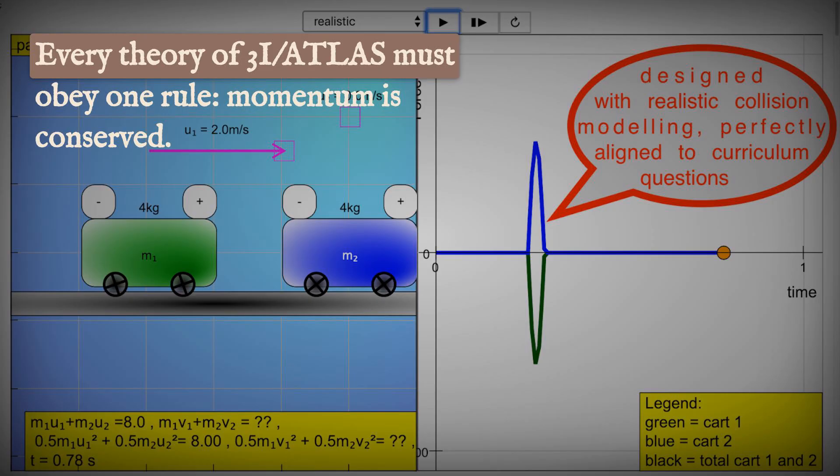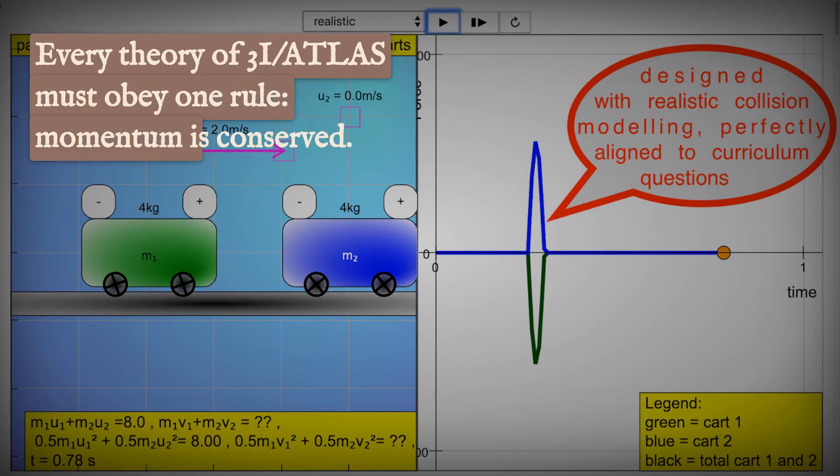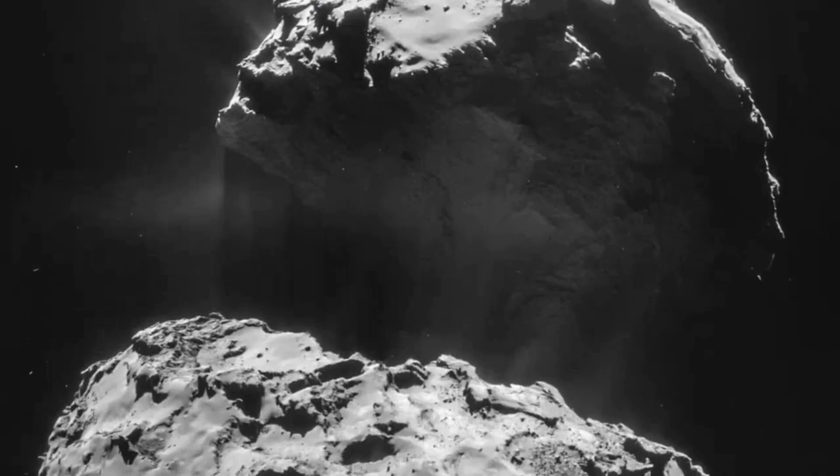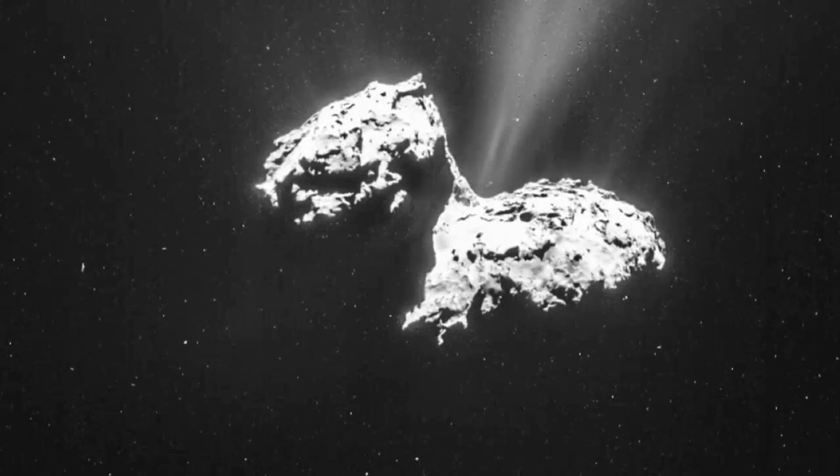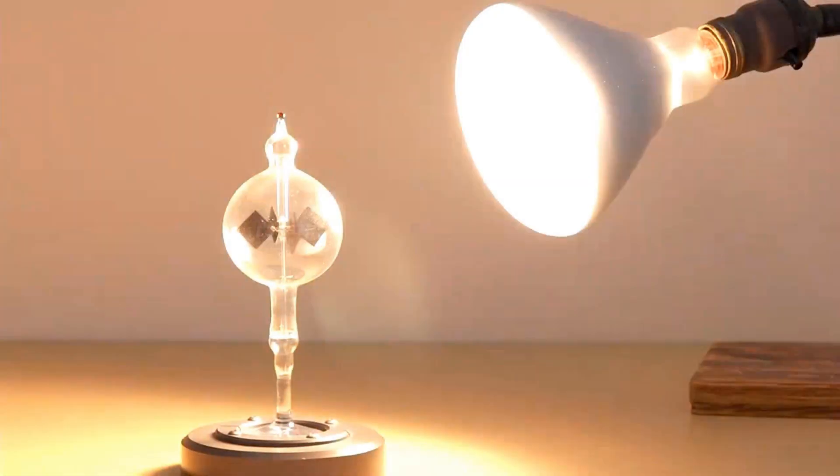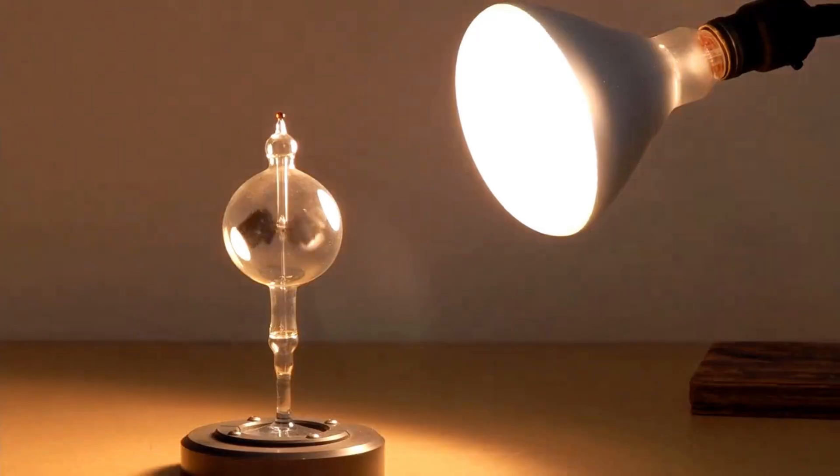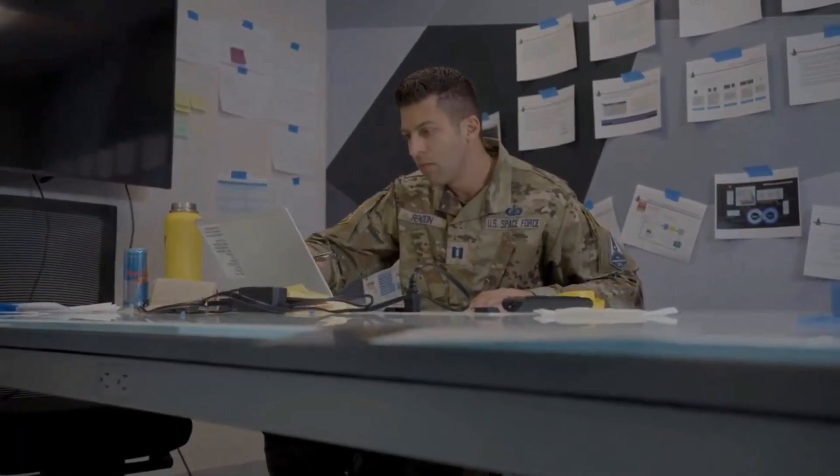Every theory for 3I-Atlas's odd path faces a basic rule. Momentum must be conserved. To change direction, the object either sheds mass, like a rocket, or is pushed by something external, such as sunlight. Both options come with strict demands.